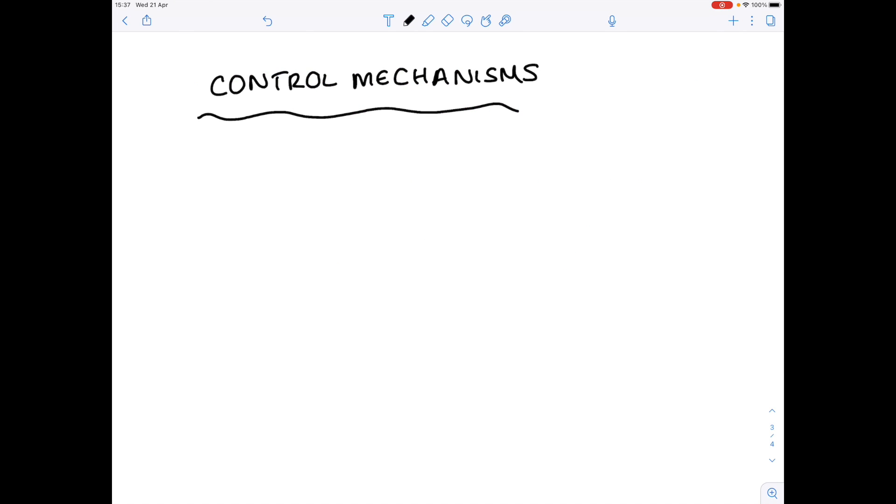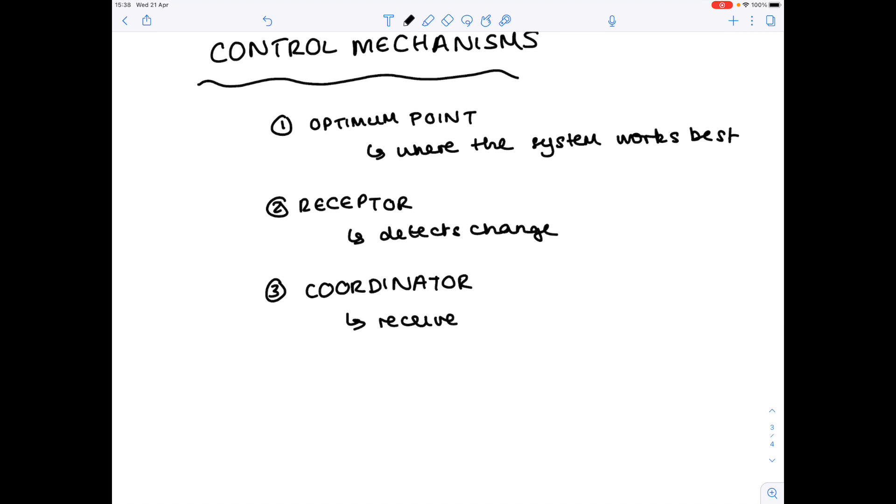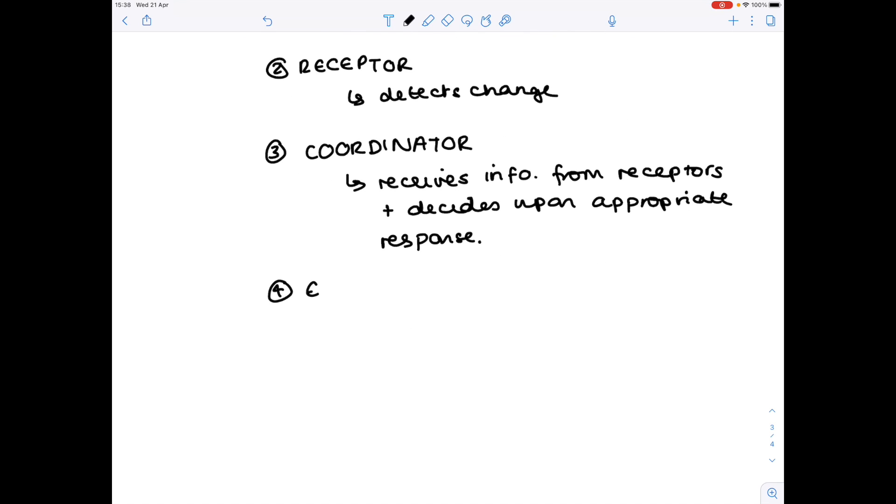So in terms of the control mechanisms which enable that internal environment to be restored, first of all you need an optimum point, the point where the system works best. You need a receptor which can detect the change. You need a coordinator which receives information from the receptors and decides upon the best response. You need an effector which brings about the response. And lastly and crucially you need a feedback mechanism.